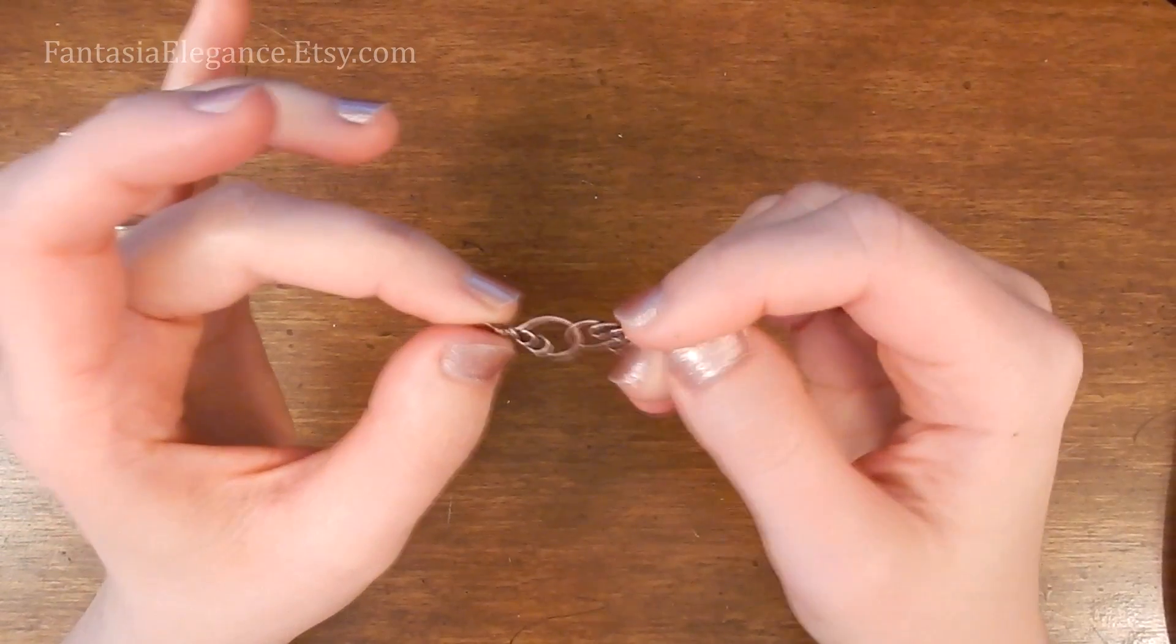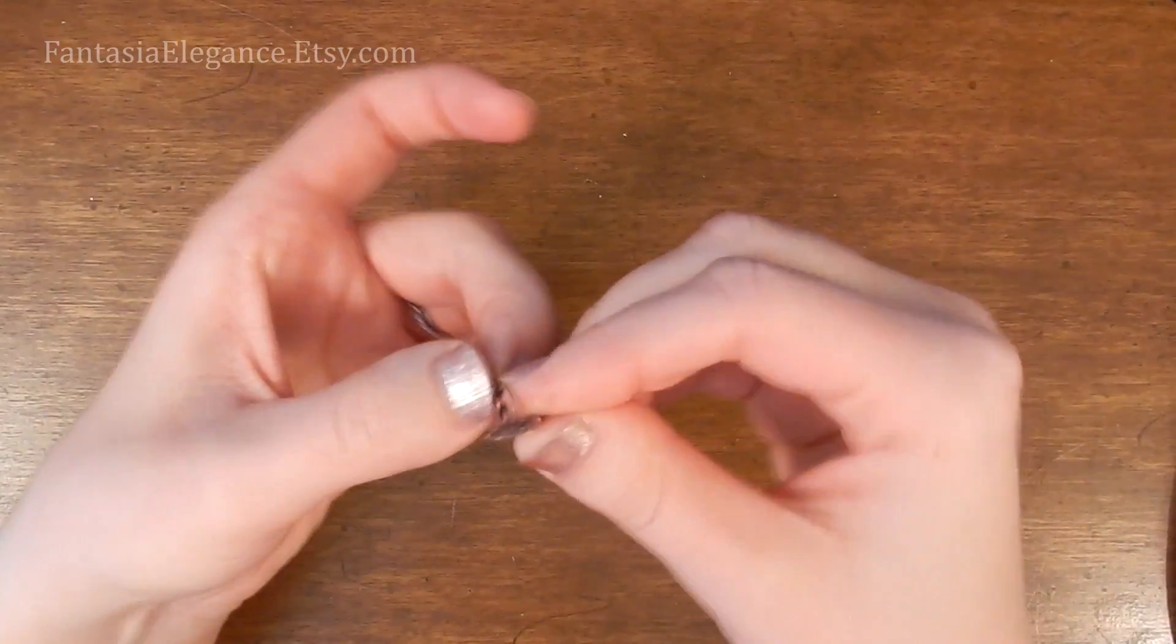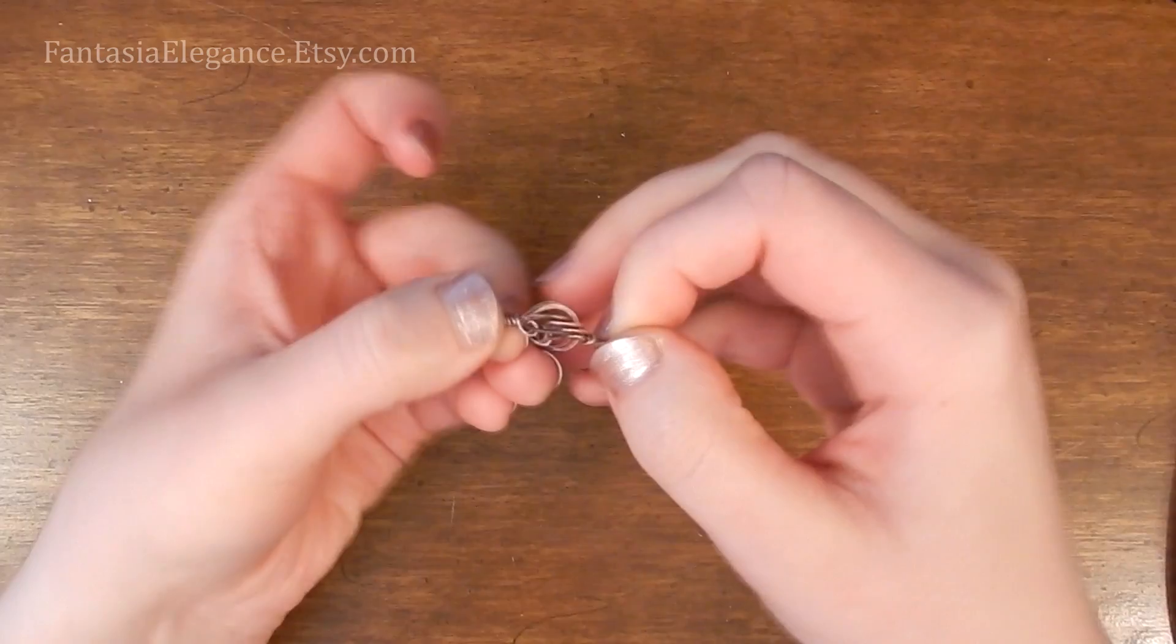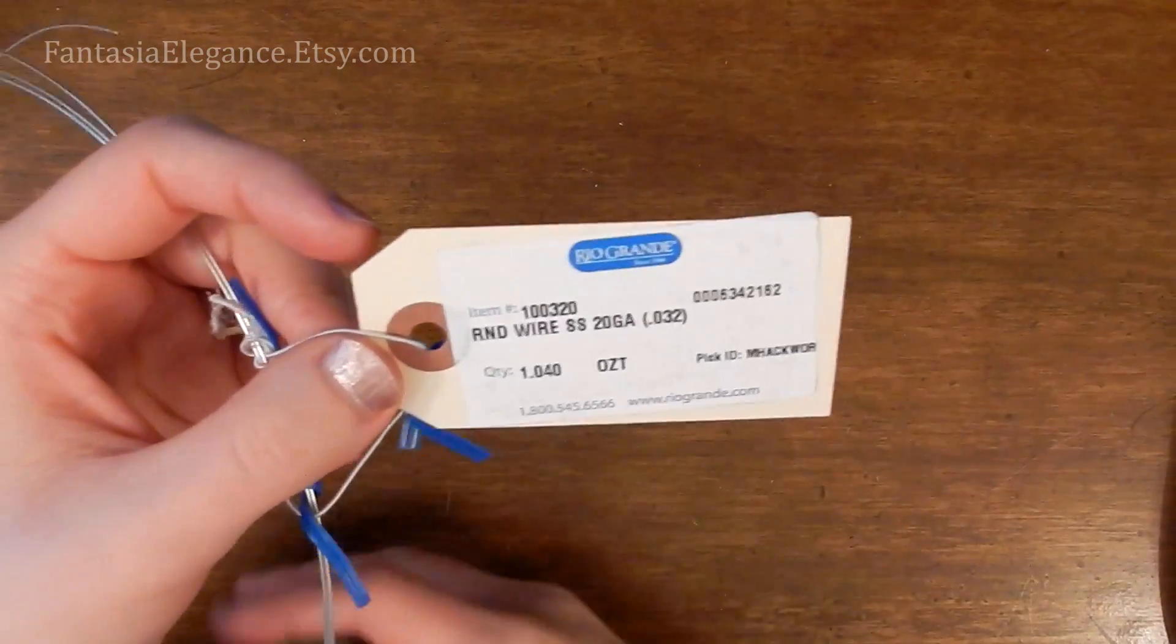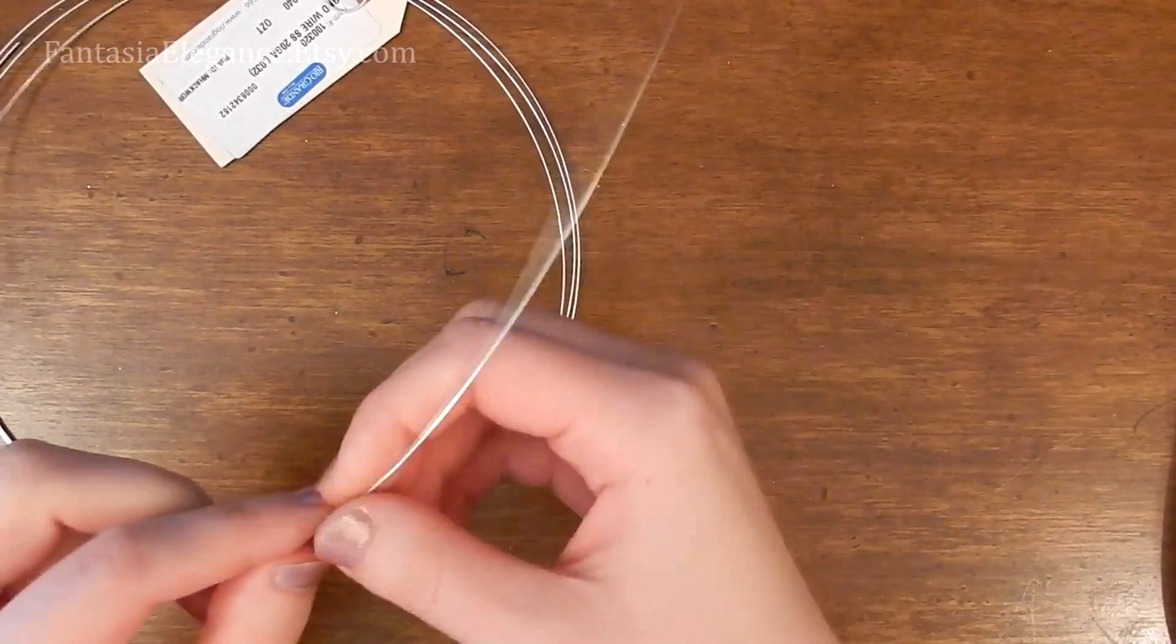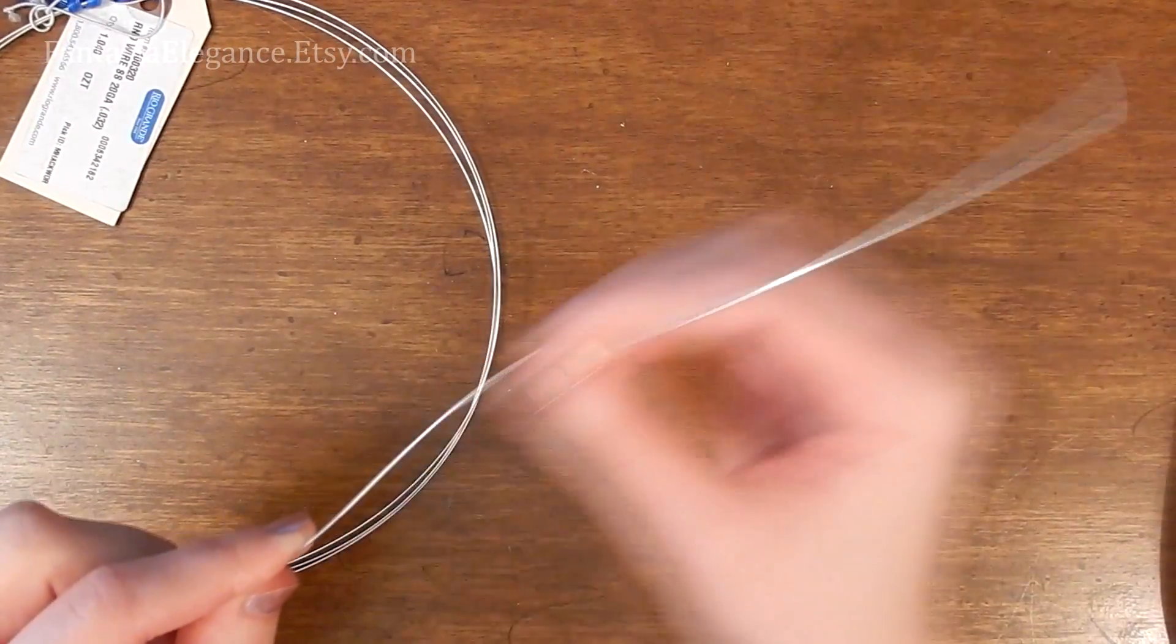Alright, so let's make the one with these little decorative loops next. Here's what they look like separated. So again, pull out your 20 gauge round dead soft wire. And if you want to use half hard for these designs that would make them even more durable. I just find dead soft is a little bit easier to work with for beginners.